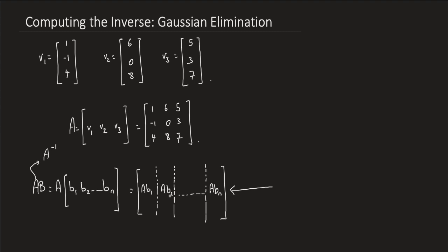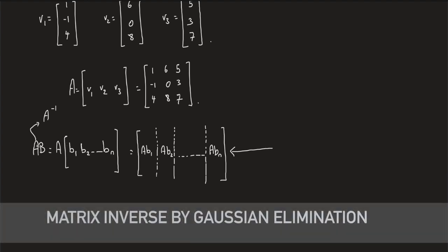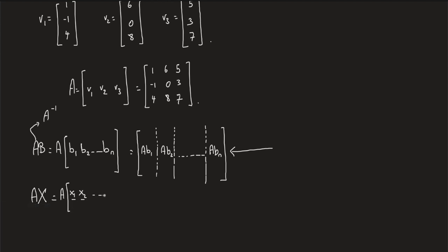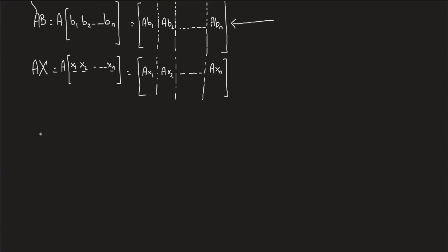Using this representation, we can develop a method for the computation of the inverse of A. We solve N linear equations of the form AX = I. If X were to be A inverse, then X must satisfy AX equals the identity. So if I replace B by X, the matrix A times [X1, X2, ..., Xn] gives [AX1, AX2, ..., AXn], and this should equal the identity.